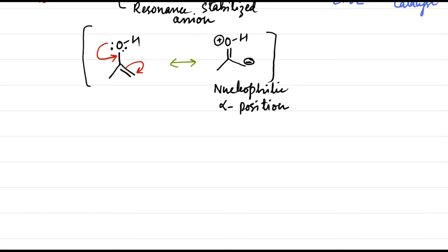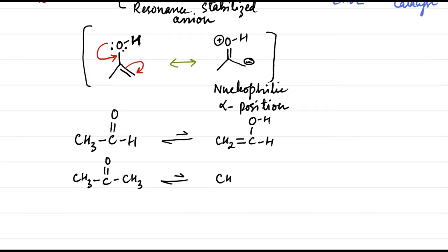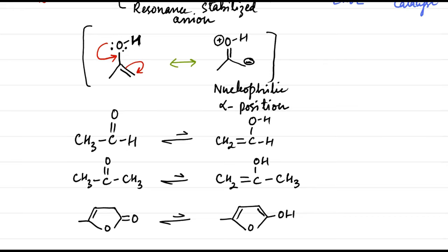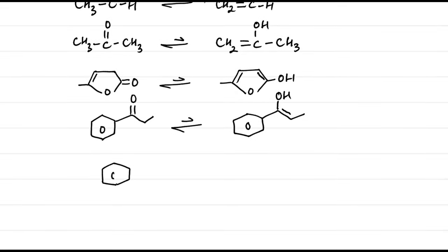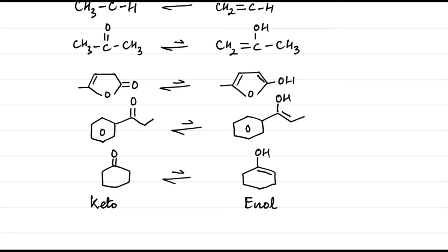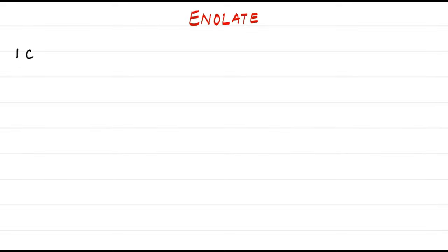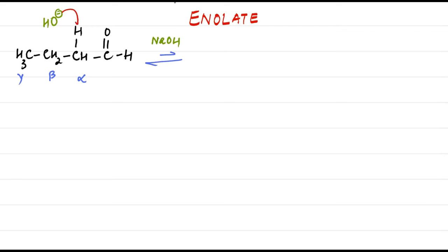Let us draw the enol forms of the following ketones. The keto tautomer is favored at equilibrium, mostly because the C=O pi bond is about 20 kilocalories per mole stronger than the C=C pi bond. When treated with a strong base, the alpha position of an aldehyde or ketone is deprotonated to give a resonance-stabilized intermediate called an enolate.